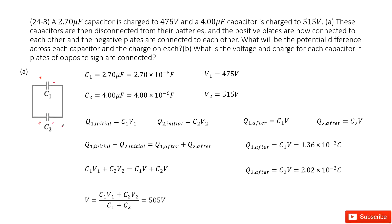Then what will be the potential difference across each one? In this case, we can consider the charge is conserved — the initial charge equals the final charge. As we connect C1 with C2, the positive charges face each other and will flow to each other. Similarly, the negative charges can flow with each other. So the charge is conserved, and the initial charge is Q1 initial plus Q2 initial.